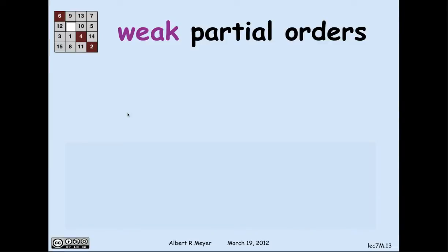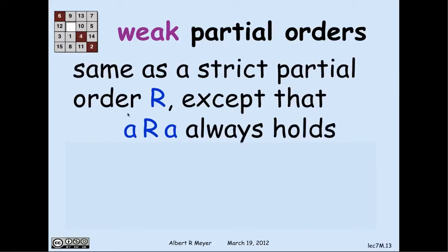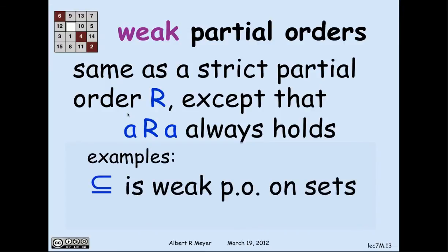A weak partial order is a small variation of a strict partial order. We take the strict property — which guarantees that nothing is related to itself — and we relax it. In fact, it's not only relaxed but completely denied: in a weak partial order, we insist that every element is related to itself.